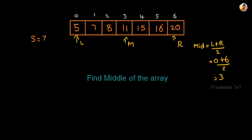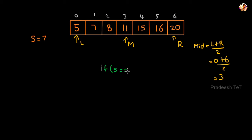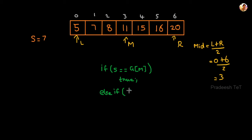Next step: we check whether our search number S equals the middle element A[M]. Here A[M] is index 3, which is 11. So we check: is S equal to 11? S is equal to 7, so no. We go to the else-if case: is 7 less than 11? Yes.